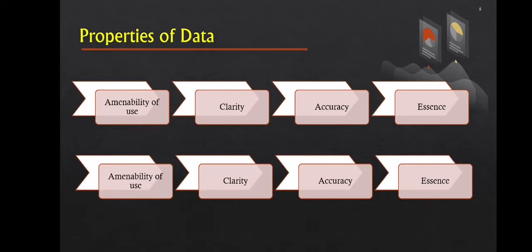The next property is refinement. Data must be processed or refined. When refined, they are capable of leading to assumptions or even generalizations. This refinement may then lead to the discovery of new information.